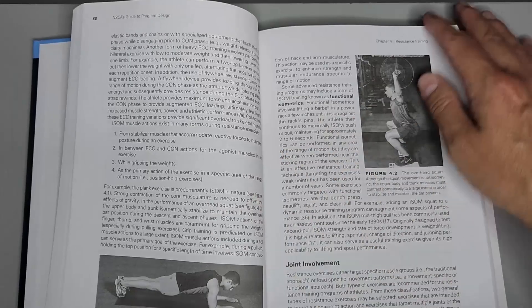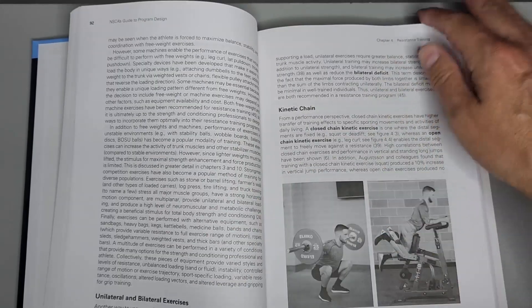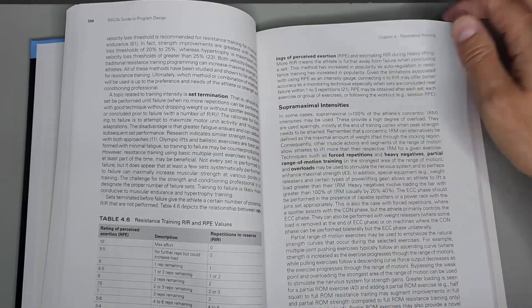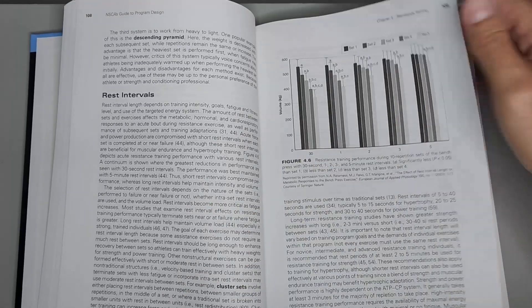The book examines the considerations and challenges in developing programs for key performance components, including power, endurance, agility, and speed.